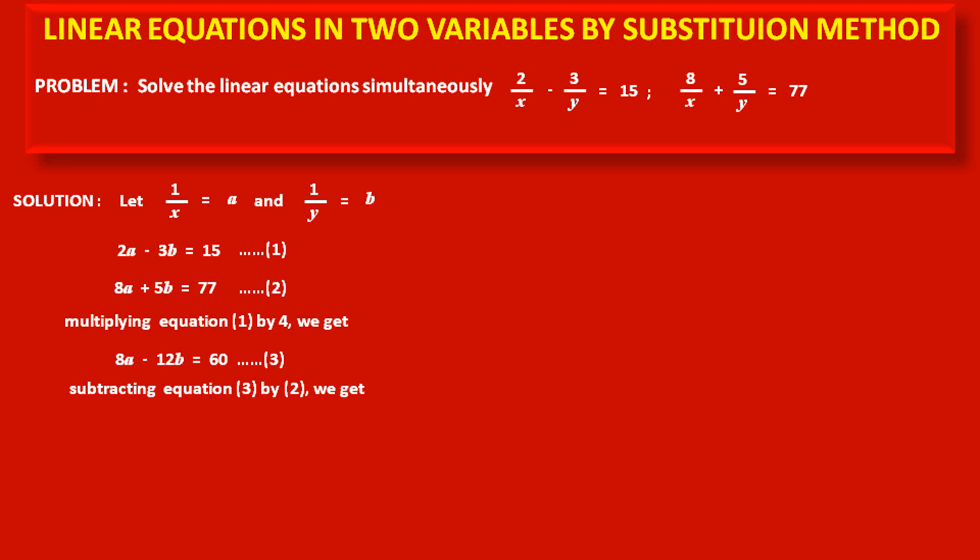Now, subtracting equation (3) from equation (2): 8a + 5b = 77 minus 8a - 12b = 60. When subtracting, we change the sign of each term in equation (3).